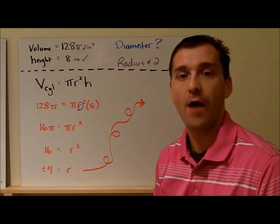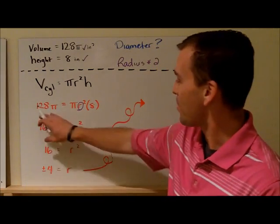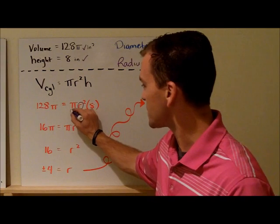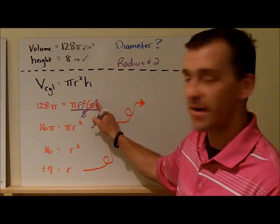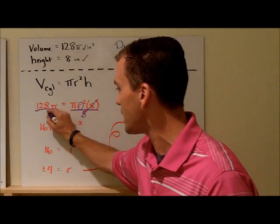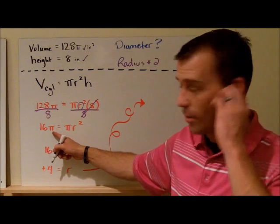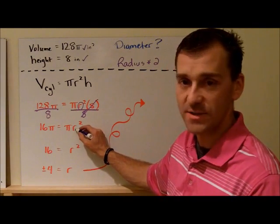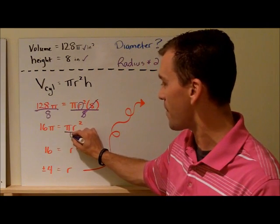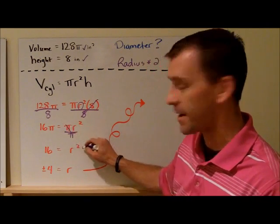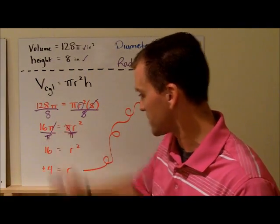When I plug this in, the first thing I'll do is divide everything by 8. That'll clear this multiplication of 8 over there. When I divide 128 by 8, that gives me 16π. Now I have 16π equals πr². I can divide everything by π. That'll undo the multiplication of π here. That cancels, I'm left with 16 equals r².